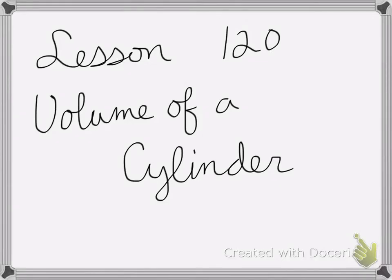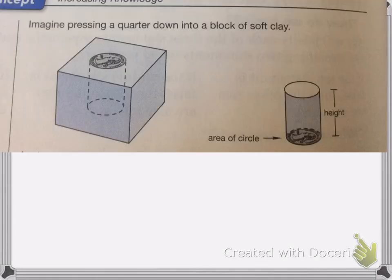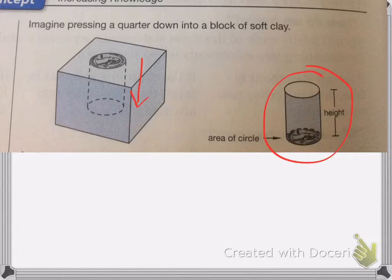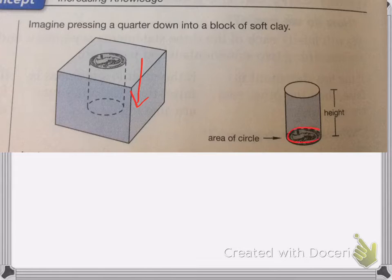Lesson 120 is volume of a cylinder. The way to imagine how to find the volume of a cylinder is to think of taking a quarter and pushing it down through a block of soft clay. When you pull out what you get, you end up with a cylinder. The volume of the cylinder, which is the inside, is the same as the area of the circle times the height, because you've pushed it all the way through the clay.